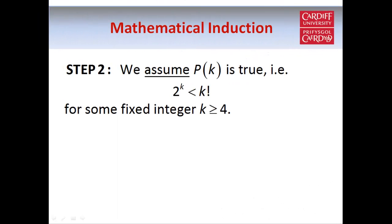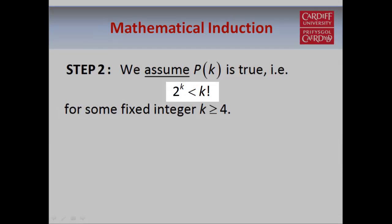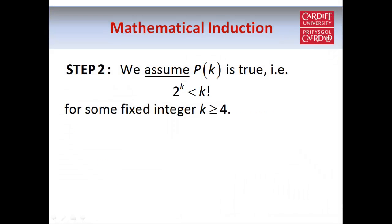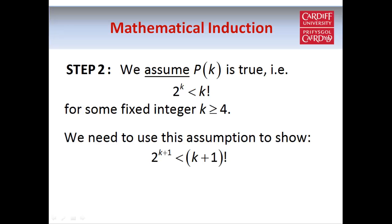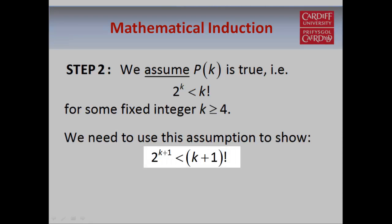Now in step 2 we make the assumption that the statement is true when n equals k, so we assume that 2 to the power k is smaller than k factorial, where k is greater than or equal to 4. And we need to show that our statement is true when n equals k plus 1 — in other words, we need to show that 2 to the power k+1 is smaller than (k+1) factorial.